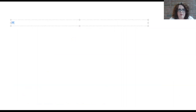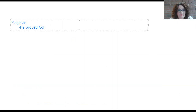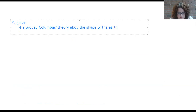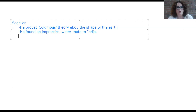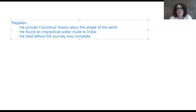Magellan did a few important things: he proved Columbus's theory about the shape of the earth, he found an impractical water route to India — impractical because it took too long and traders could not make money going that way — and he died before the journey was complete.